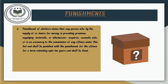The fourth punishment is for abettors. Any person who, by the supply of or desire for money, is providing premises, supplying materials, or in any way counsels, aids, or is an accessory to the commission of any offense under this act, shall be punished with imprisonment for a term extending up to 10 years and shall also be fined.